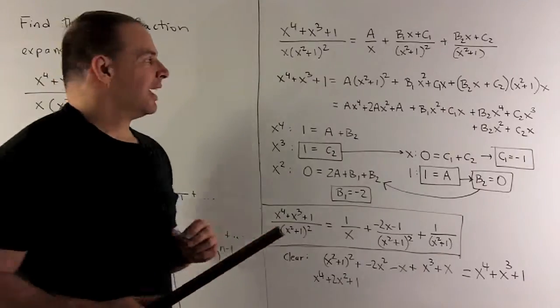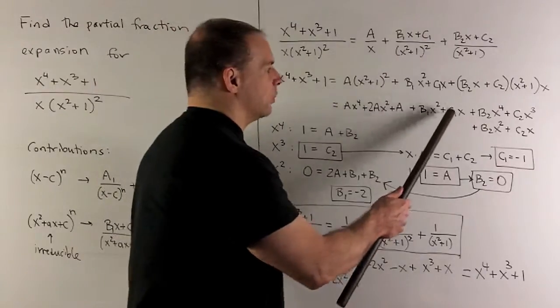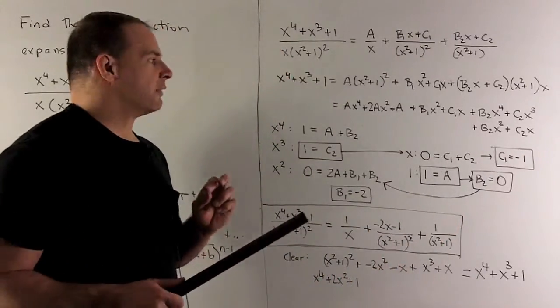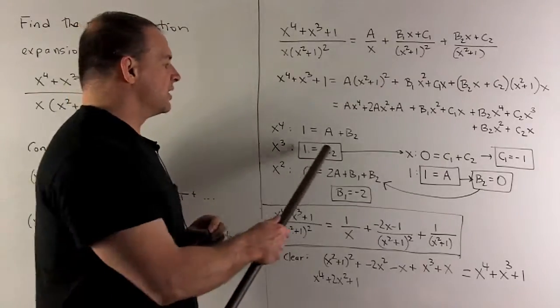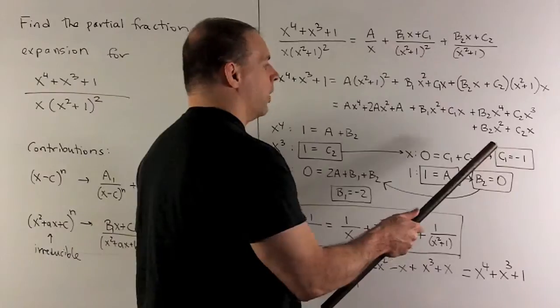For x, again, we have a 0 on this side. On the other side, we'll have a c1 and a c2. And then you note here, I can solve for c1. We know that c2 is equal to 1. So we're going to have c1 is equal to minus 1.